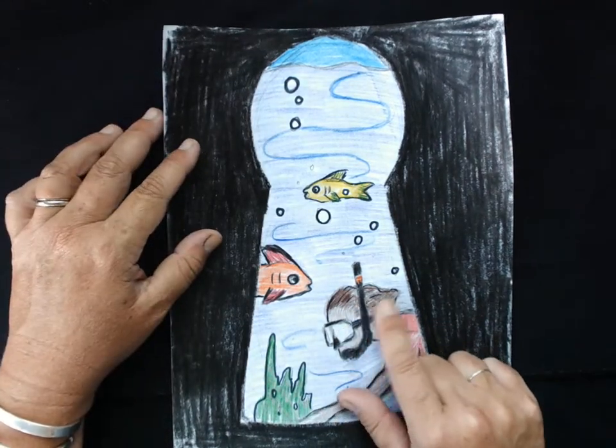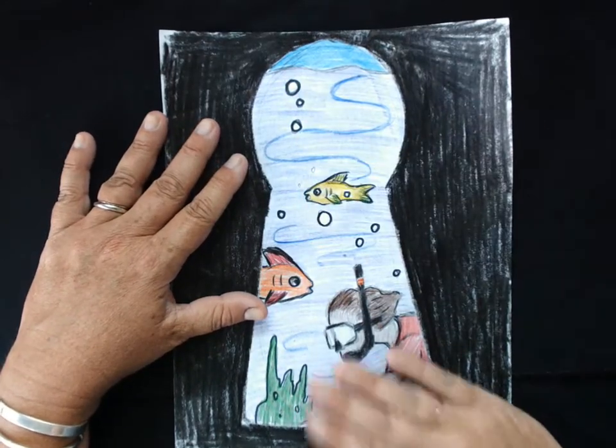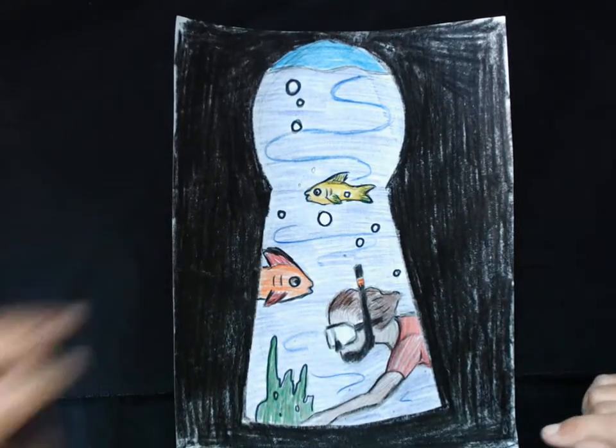You can also use neutrals to make details, but just make sure that it's not the main color inside your idea. So I'm going to start by showing you guys how to draw a keyhole.